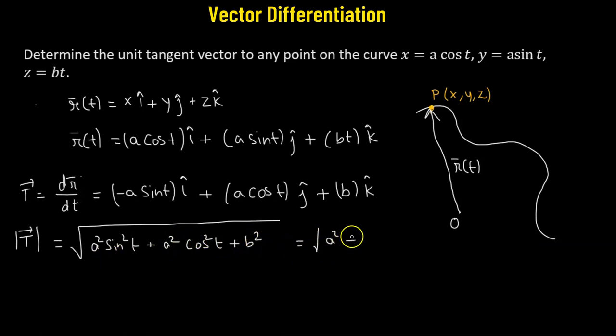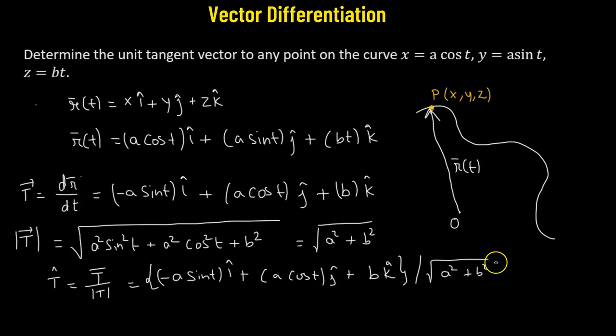The unit tangent vector at that point P will be given by the vector T divided by its magnitude. That's -a sin(t) i cap + a cos(t) j cap + b k cap. This entire vector is divided by the magnitude, which is √(a² + b²).